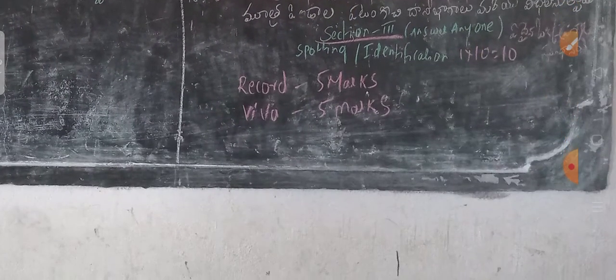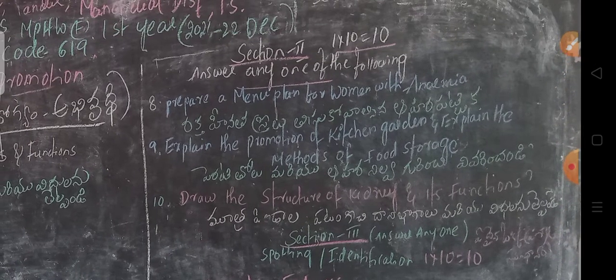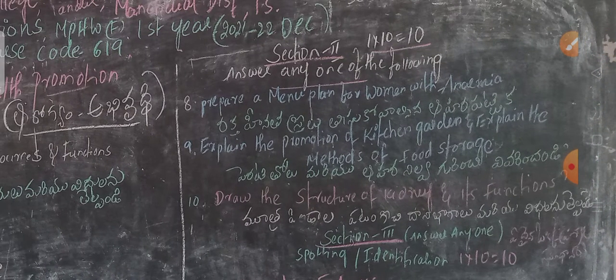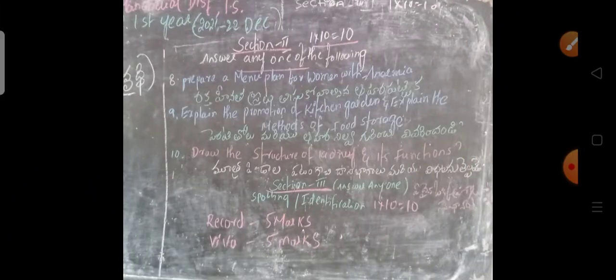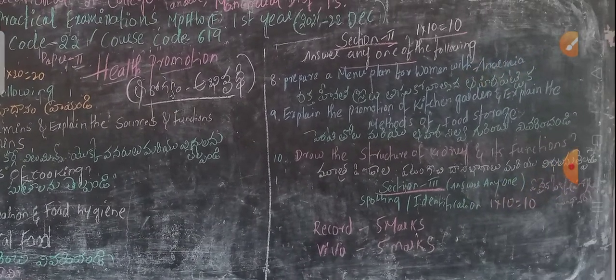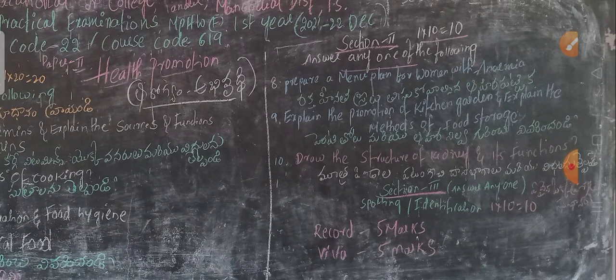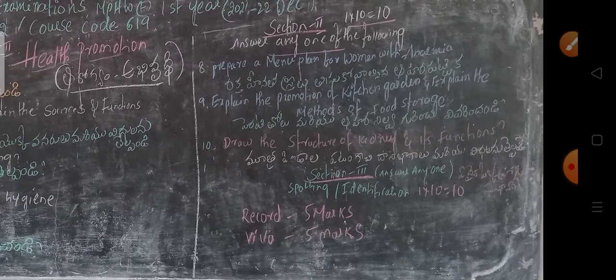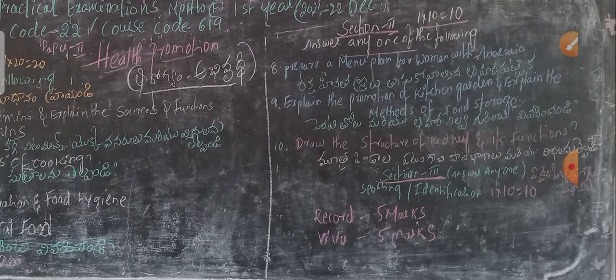Coming to section two, answer any one of the following. The 8th question: prepare a menu plan for a woman with anaemia. The 9th question: explain the promotion of kitchen garden and explain the methods of food storage. The 10th question: draw the structure of kidney and its functions. Section two is one question, ten marks.